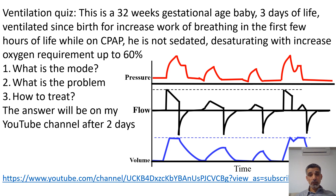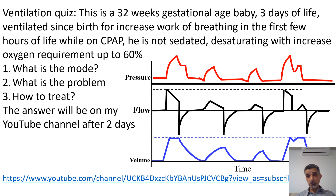How to treat: first, if it's IMV, we need to make it synchronized. I prefer not to use IMV at this point — I would switch to a completely supporting mode and prevent the baby from taking unsupported spontaneous breaths. There is also an unlikely possibility that it could be PTV or SIPPV, but the trigger is set very high, so the machine is not recognizing that the patient is actually breathing. For example, if the baby generates a flow of one liter but the trigger is set at two liters, the trigger is too high.